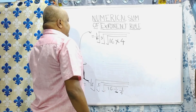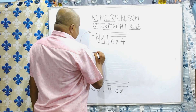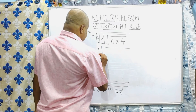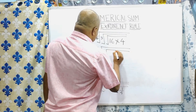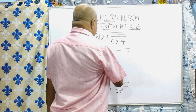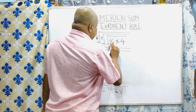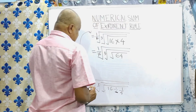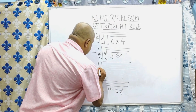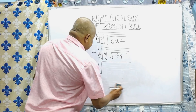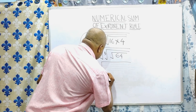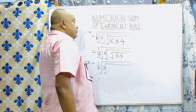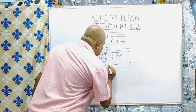Now next step: root over 1 by 16, within root. Again square root, within root mark, this is 3. And 16 into 4 equals 64. Root over 64. Then next step: 1 by 16. Again 3, and 6 — square root of 64 is 8. So this is 8.